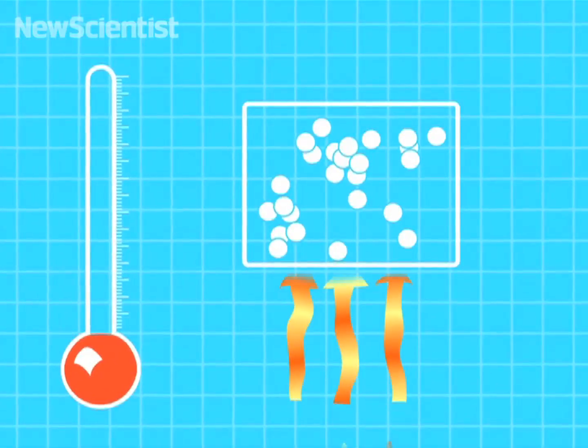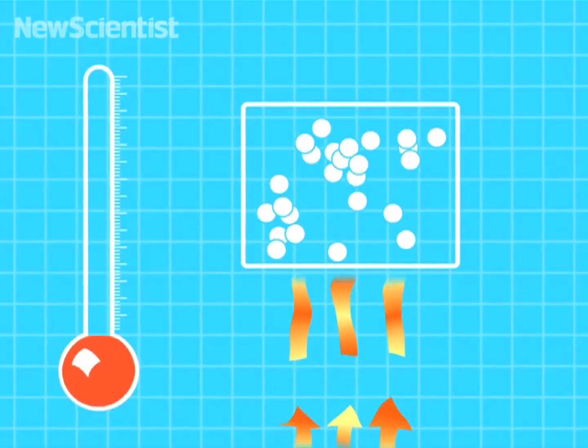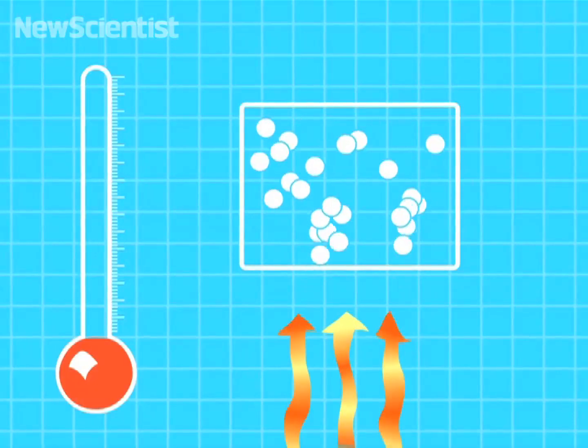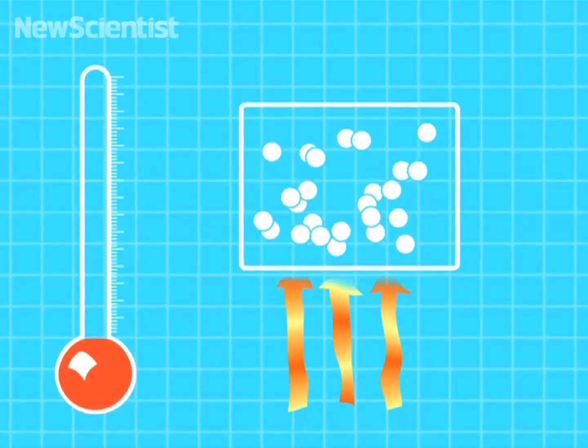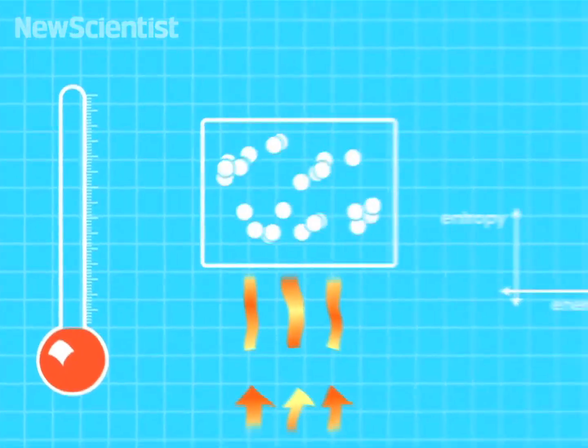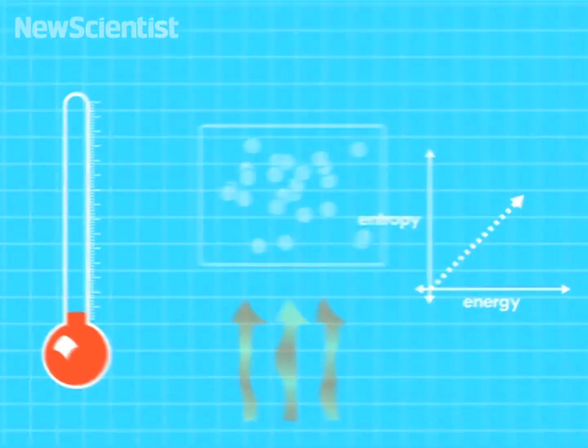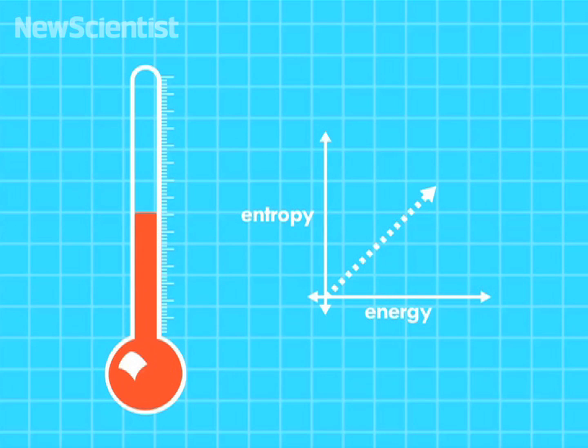As you add energy to a gas, particles start to move. Which means their disorder, or entropy, goes up. And so does the temperature.